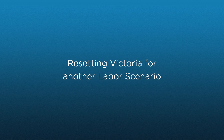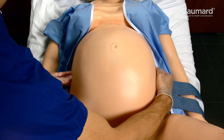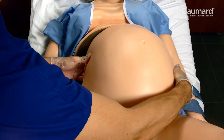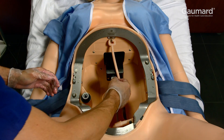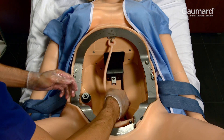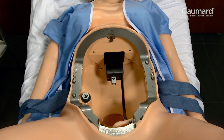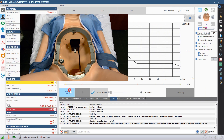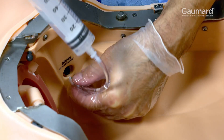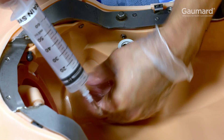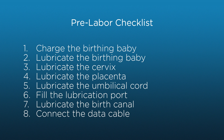Once the scenario has ended, resetting for the next scenario is easy. Do not attempt to lift the contractions cover without first releasing both latches. Press the release sledge and gently lift the cover enough to disconnect the data cable, then remove the cover. Remove the birthing rod from the motor by pressing the lever and remove the birthing ring from the retaining hook. Press the reset button in the software to return the motor to a starting position. Once the motor has returned to the starting position, use the drain syringe to pull the mineral oil and simulated blood from the drain port. Victoria is now ready to perform another birth. Prepare the birth, making sure to complete the pre-birth checklists.